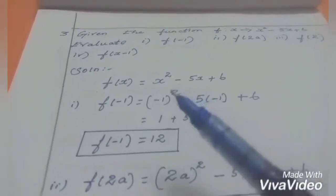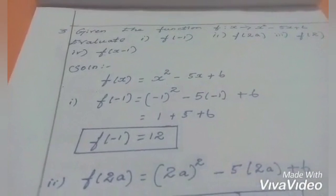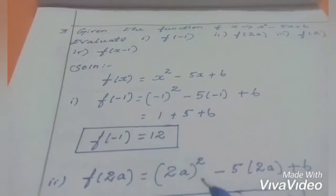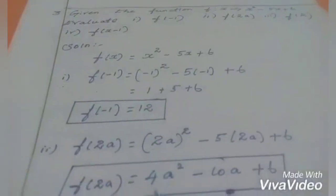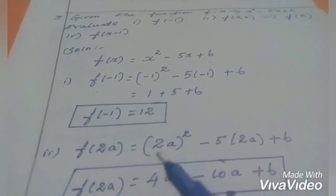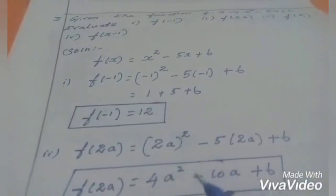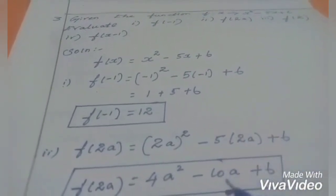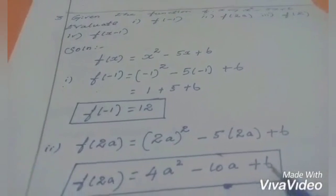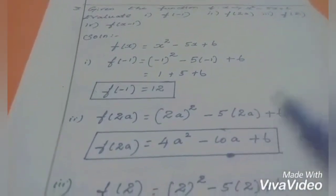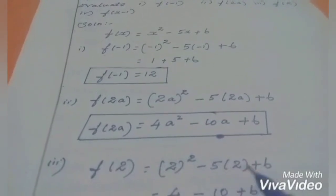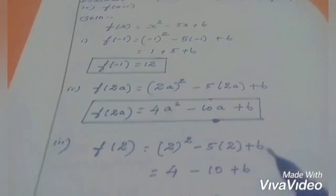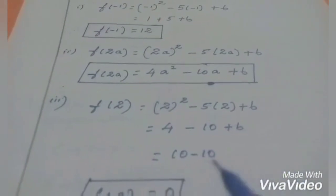For f(2a), substitute x = 2a: (2a)² - 5×(2a) + 6 = 4a² - 10a + 6. For f(2), substitute x = 2: (2)² - 5×(2) + 6 = 4 - 10 + 6 = 0. So f(2) = 0.